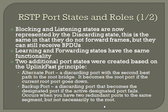Two additional port roles were created based on the uplink fast principle: the alternate port and the backup port. The alternate port is a discarding port with the second best path to the root bridge — it becomes the root port if the current root port goes down. The backup port is a discarding port that becomes the designated port if the active designated port fails; it occurs when you have two ports connected to the same segment, but not necessarily to the root.